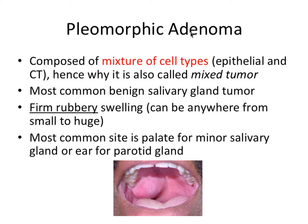First we have pleomorphic adenoma, which is the most common benign salivary gland tumor. So that's really important. It's composed of a mixture of cell types, both epithelial and connective tissue, hence why it is also called a mixed tumor. So mixed tumor, mixture of cell types.